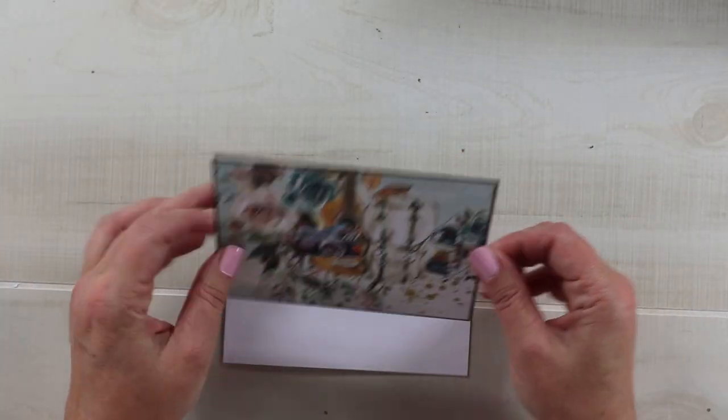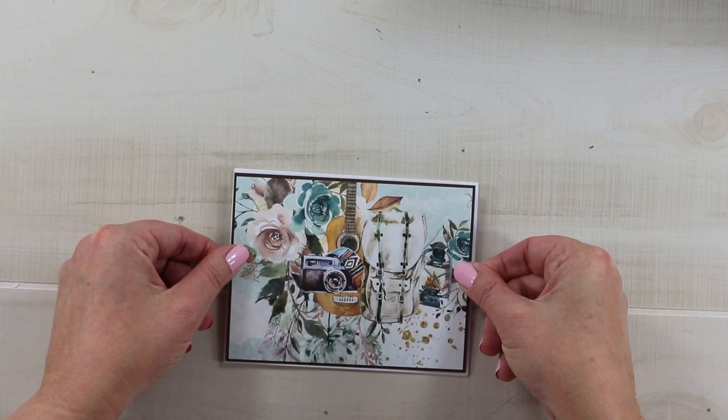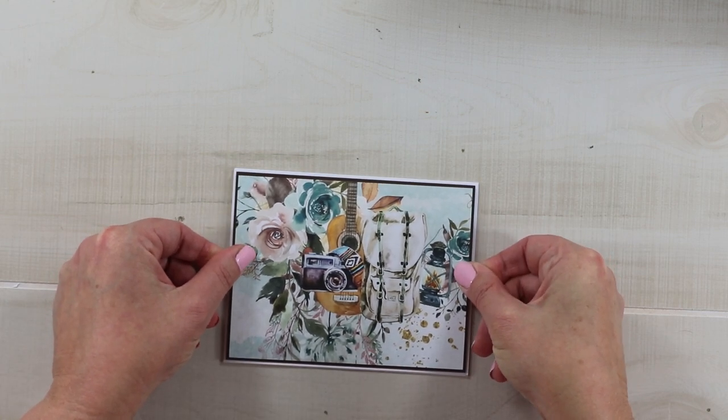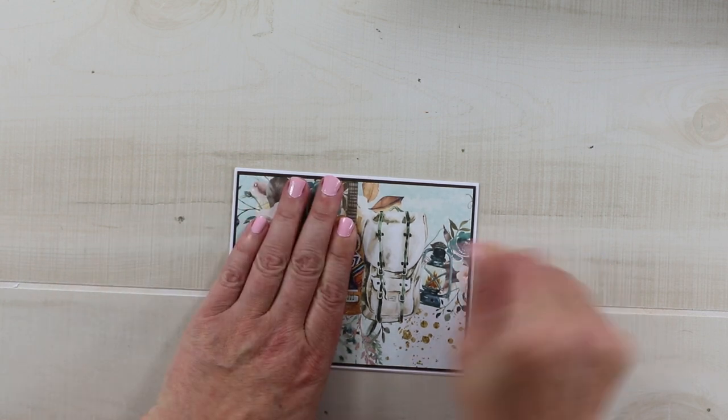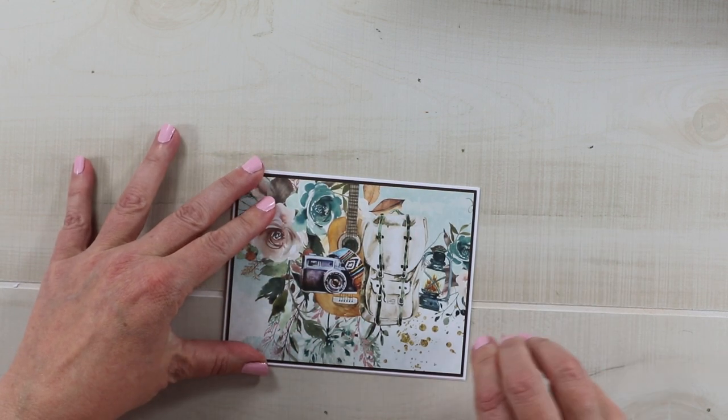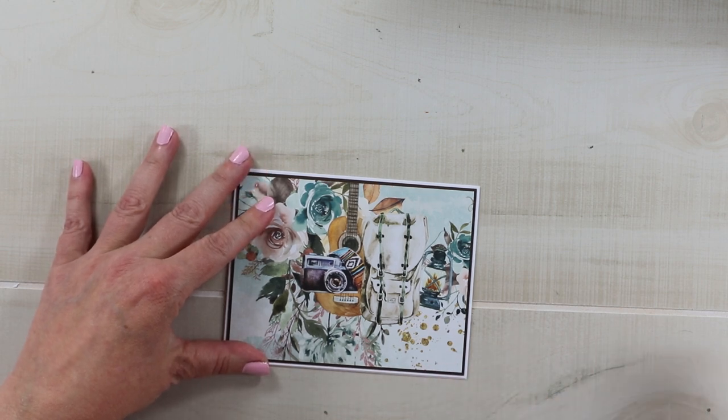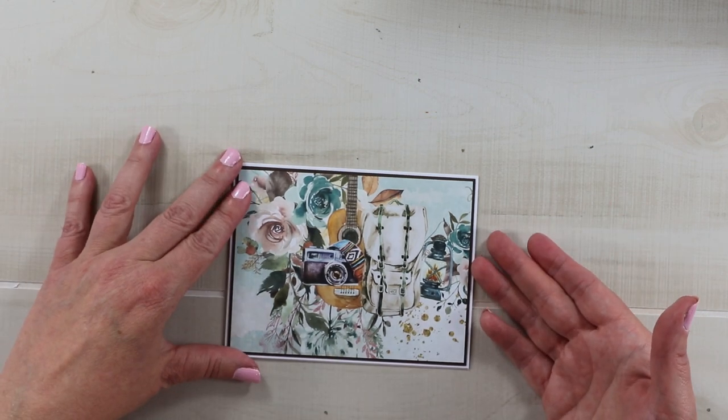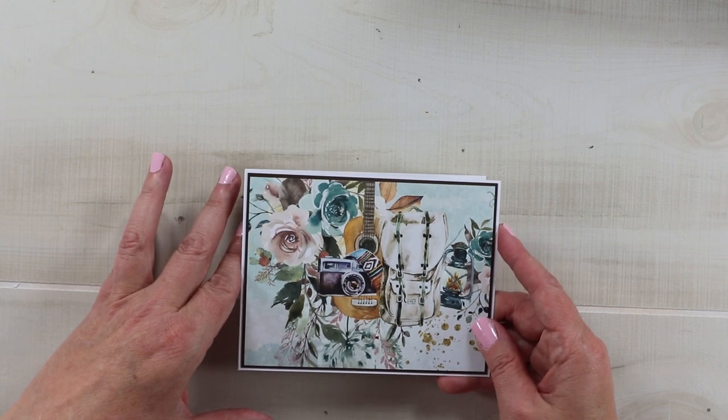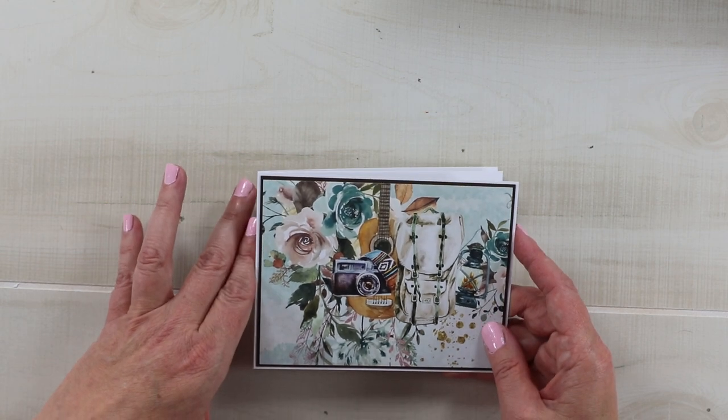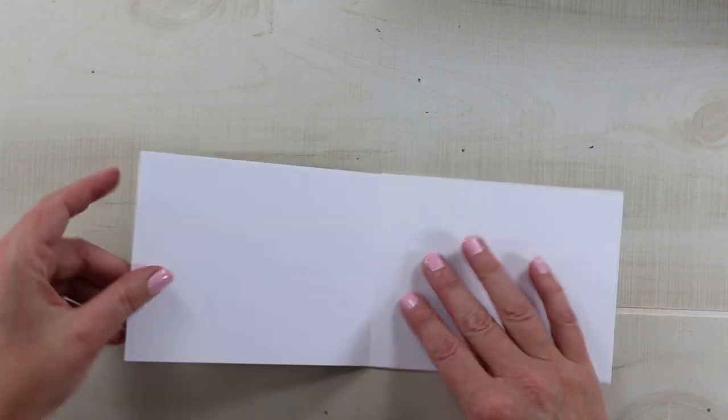Now because we're making similar inserts for each compartment this actually goes along pretty quickly because once you have your measurements ready for cutting your paper you can just cut enough for all of the four for each section. So that will help this process go along a little bit faster. Here is our image for the front. It's absolutely beautiful with the guitar and the flowers and the lantern.